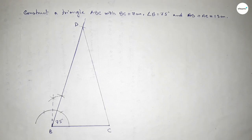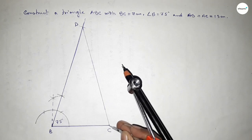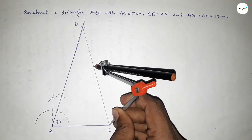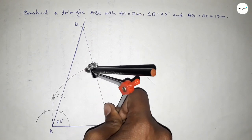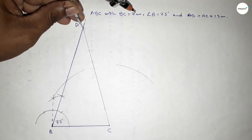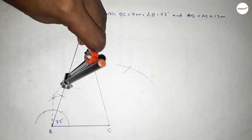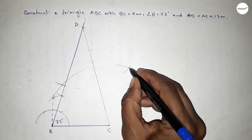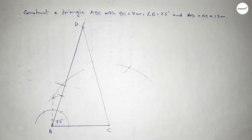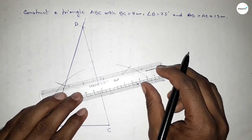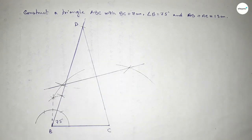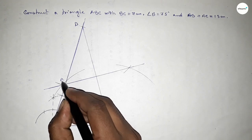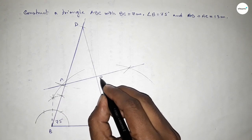Next we have to bisect the line CD. Putting the compass on C, taking greater than half of CD, and drawing an arc. Then placing the compass on D with the same length and cutting arcs on both sides. Both curves intersect at two points — joining them gives the perpendicular bisector of CD.